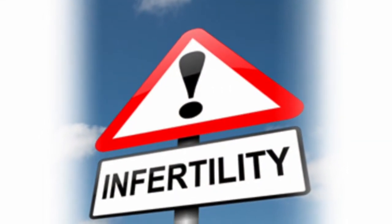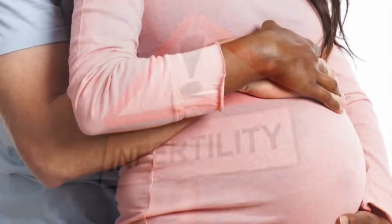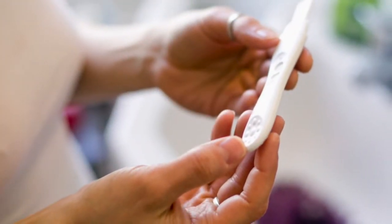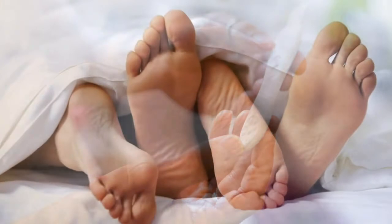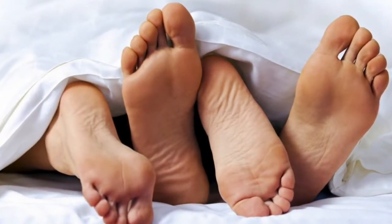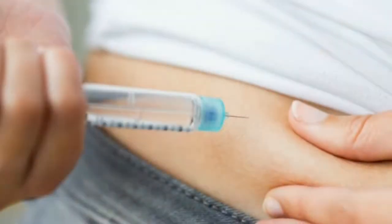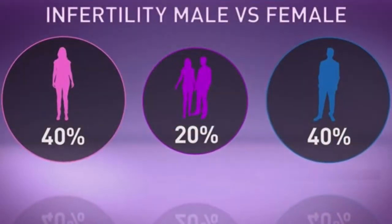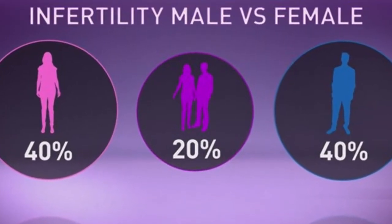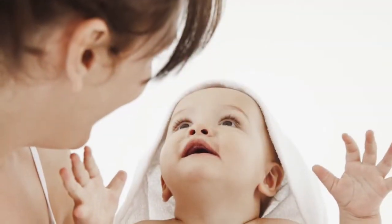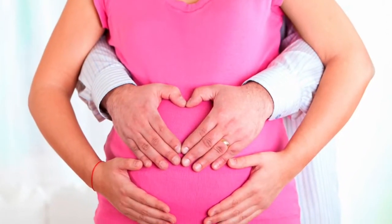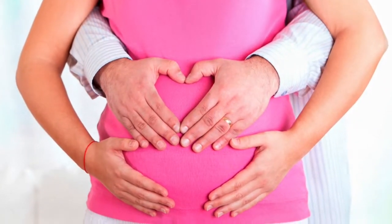Unfortunately, in many cases, doctors never find out why. The following semen problems are possible. Low sperm count, or low concentration: the man ejaculates a lower number of sperm compared to other men. Sperm concentration should be 20 million sperm per milliliter. If the count is under 10 million, there is a low sperm concentration, considered subfertility.